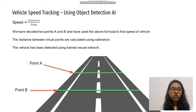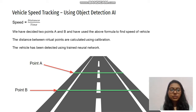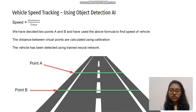Coming to our first feature, vehicle speed tracking: we have used object detection AI. We defined two virtual points A and B and used the formula speed equals distance divided by time to calculate the speed. The distance between the virtual points is calculated using calibration, and the vehicle being detected is trained on a neural network.